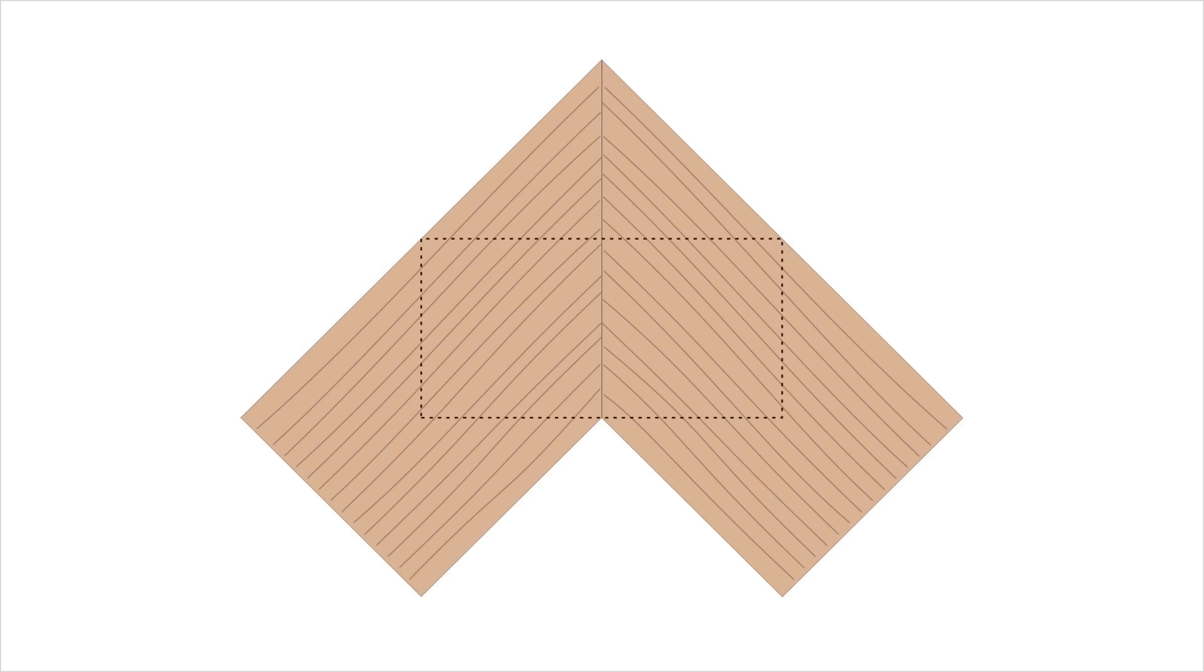Then I cut out a rectangle that's the same shape as the test samples in my earlier studies. Now I have a sample with the same grain direction as in a miter joint, but I can compare the breaking strength directly with end-to-end and end-to-side joints.